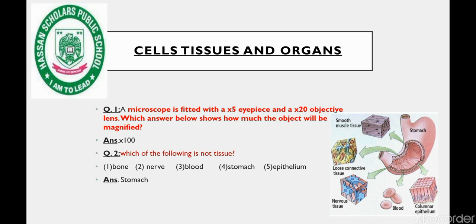We will do the next question. Here a diagram is made from different tissues: smooth tissue, loose connective tissue, nervous tissue, blood, and columnar epithelium. These different tissues together make up the stomach.